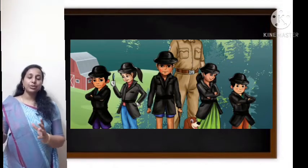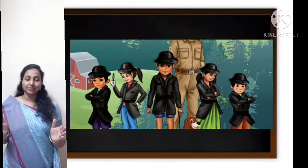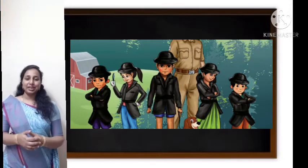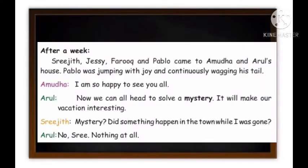Now, after a week, what happened in these children's life? Come on, let's continue reading. Students, take page number 72. After a week, Sreejit, Jesse, Farooq, and Pablo came to Amuda and Arul's house. Pablo was jumping with joy and continuously wagging his tail.